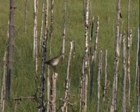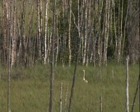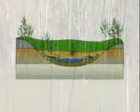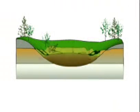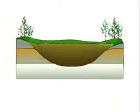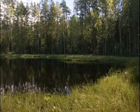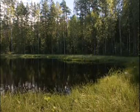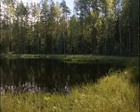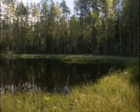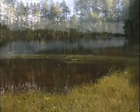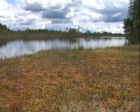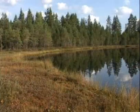Secondly, peatland plants spread onto surrounding forests or mineral soil and may slowly suffocate trees and other plants. Thirdly, peatland forms when bodies of water fill up. A lake or pond can fill up from the top or bottom, or from both directions at the same time.